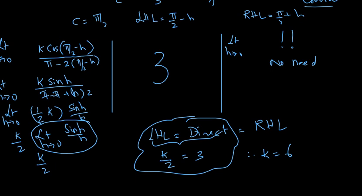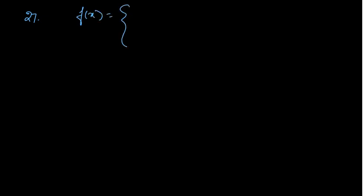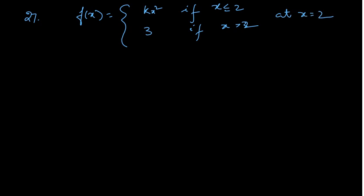This question was given in one of the most recent exam years. So we will go to question 27 now. For question 27, f(x) equals kx² if x is less than or equal to 2, and f(x) equals 3 if x is greater than 2. So at c equals 2.